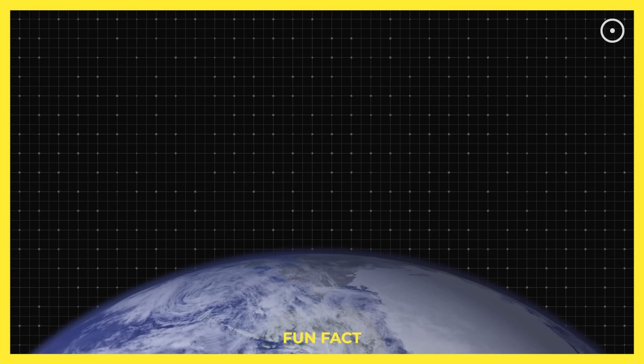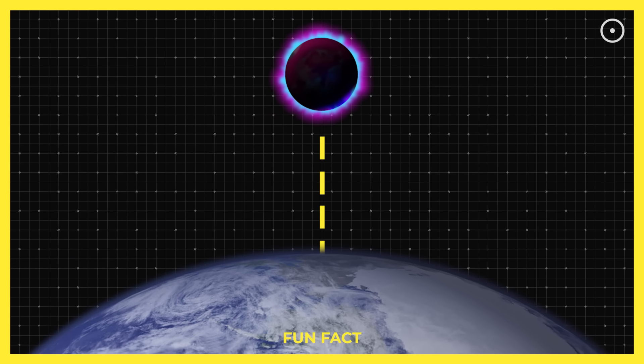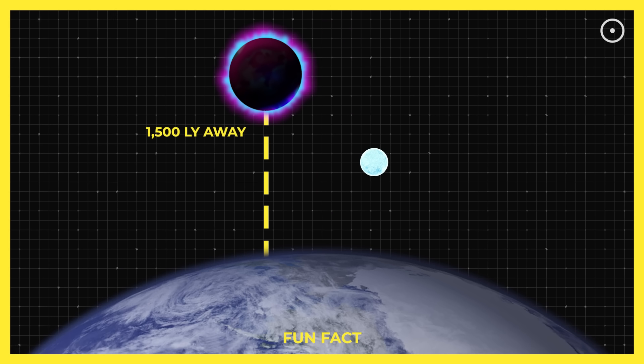Fun Fact As of 2024, the nearest known black hole to Earth is about 1,500 light-years away. The nearest neutron star? Only about 400 light-years. Oh, but don't worry, neither is coming to visit us anytime soon.